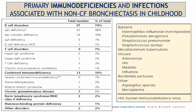Here I reported the most common immunodeficiencies associated with non-CF bronchiectasis in childhood. More than 70 percent of kids with non-CF bronchiectasis and immunodeficiency have B cell disorders. T cell disorders, combined immunodeficiency, and other kinds of immunodeficiency are much rarer. On the right part of the slide you see the most common bacteria and viruses associated with non-CF bronchiectasis. Among bacteria, the most common organism isolated from sputum is Haemophilus influenzae. About viruses, adenovirus, HIV, measles, and influenza may be associated with bronchiectasis. Remember Bordetella pertussis and Mycoplasma pneumoniae.